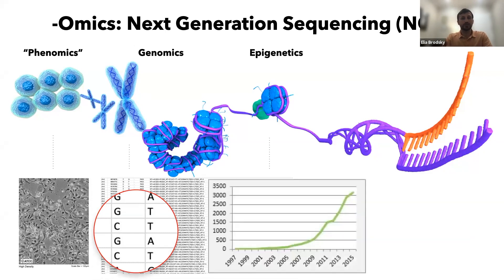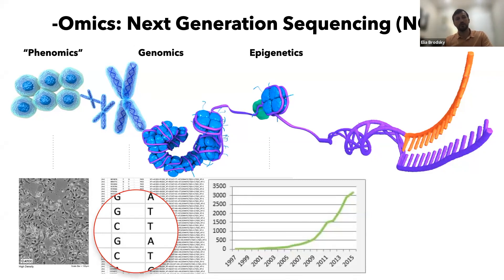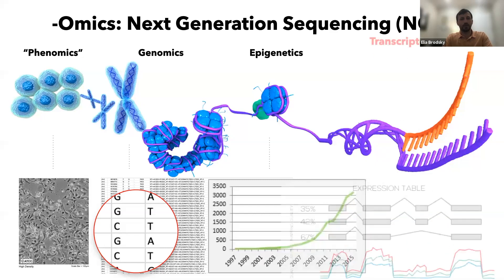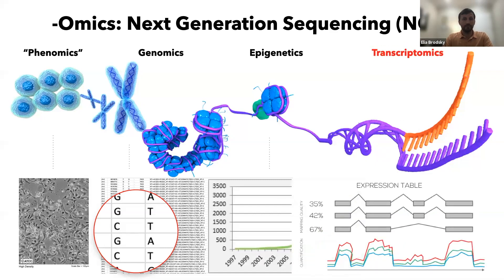Epigenomic data is a field that has been growing very fast since about 2007–2008, where we see an increased appreciation of how translation of sequences to mRNA and proteins is an important component of non-hereditary regulation of genomic sequencing data.